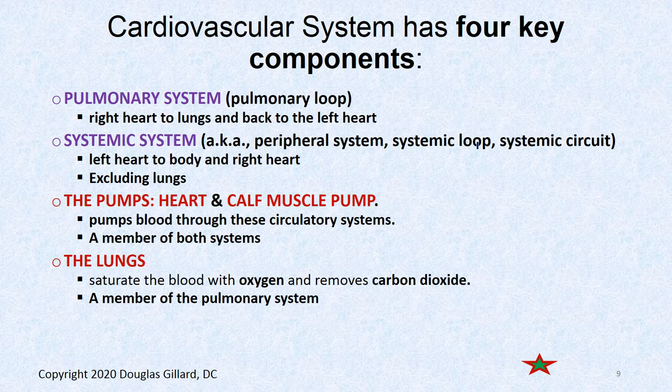There are actually four subsystems within the cardiovascular system. There's the pulmonary loop — that includes the right heart and the vessels leading to the lungs and back to the left side of the heart. Then there's the much larger systemic loop — everything except the lungs, going all the way up to your head and down to your toes. It includes the powerful left side of the heart, which has to contract much harder to force blood through this giant systemic system.